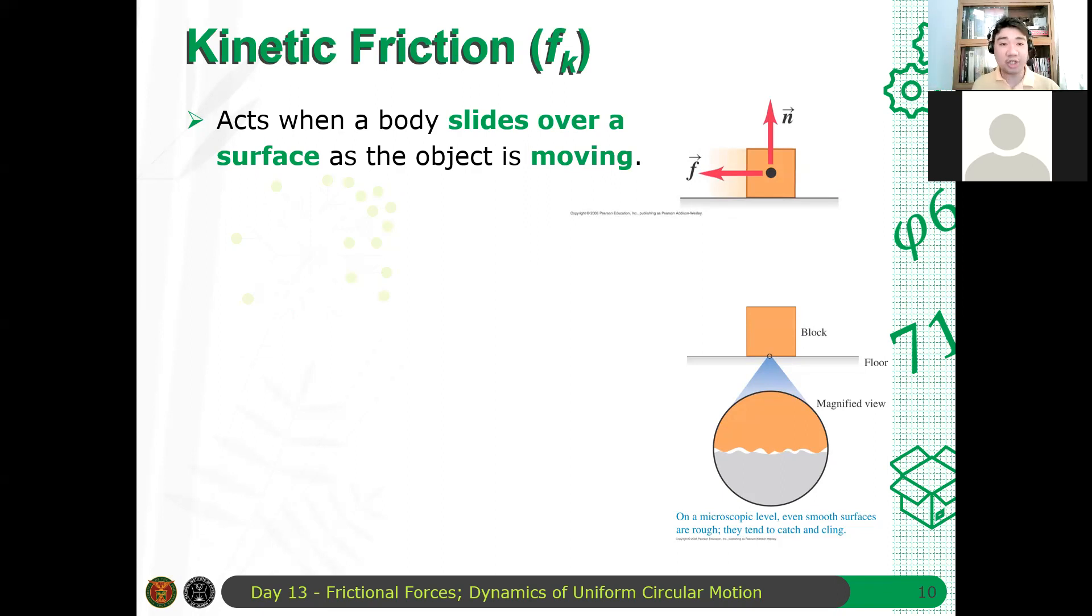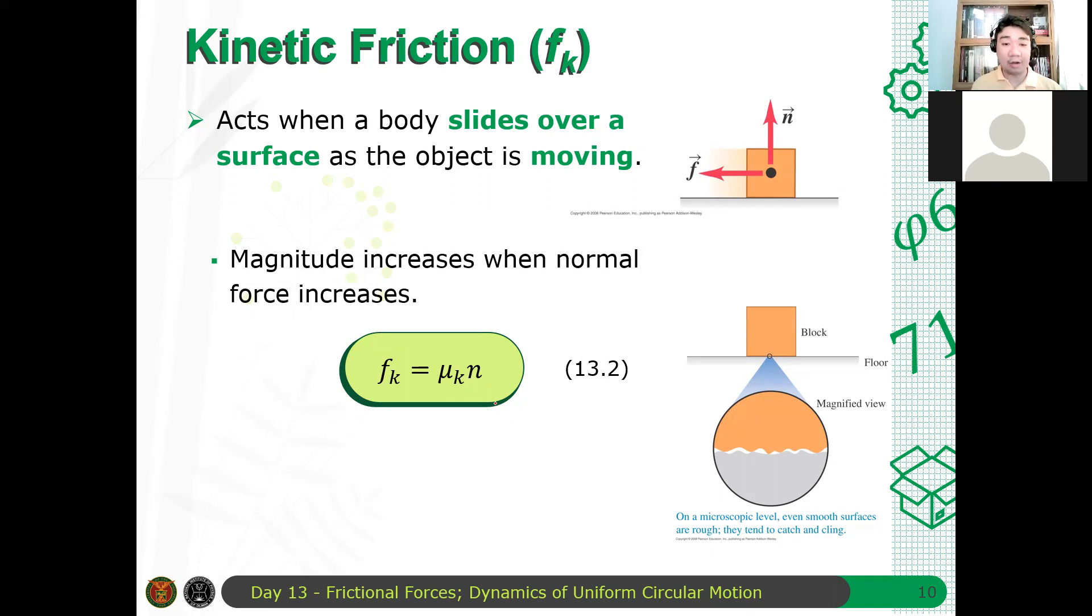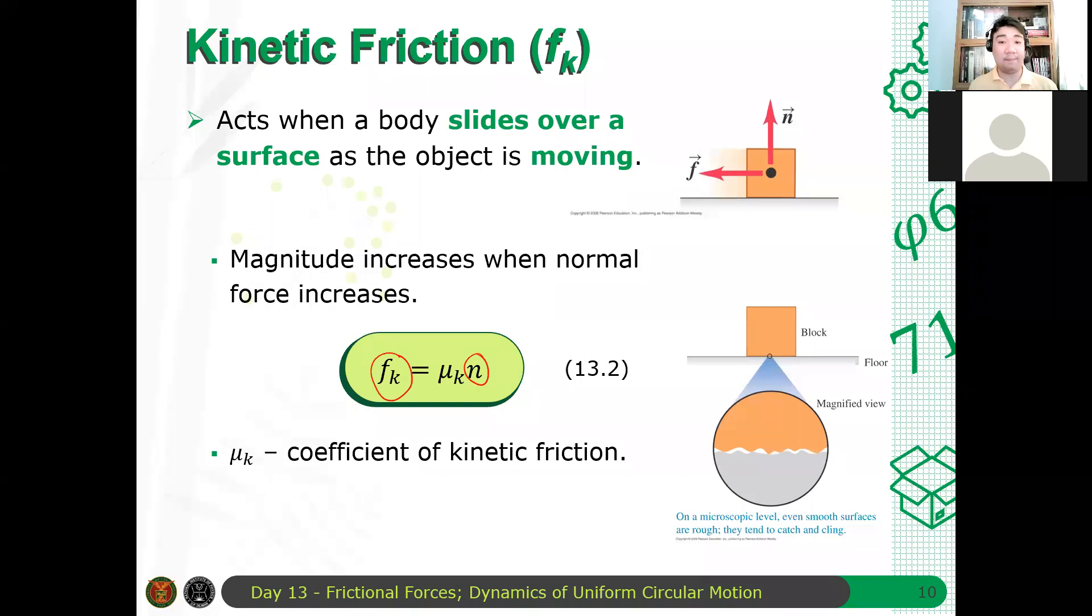Its magnitude increases when the normal force increases. So here, as long as n is constant or the normal force exerted on the body is constant, the kinetic friction is also constant, regardless of how large the force you apply is. So here, instead of having an inequality, equation 13.2 is actually an equation relating the kinetic friction and the normal force. And the proportionality constant of the kinetic friction is your coefficient of kinetic friction, mu k. Usually, I use mu k more than mu s because it's less complicated than mu s. But we will solve problems with static friction in this topic.